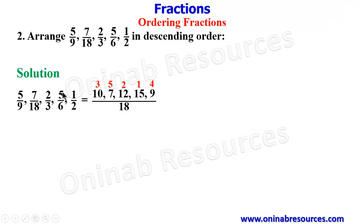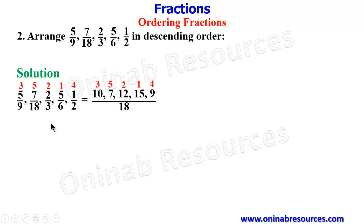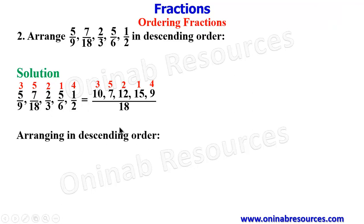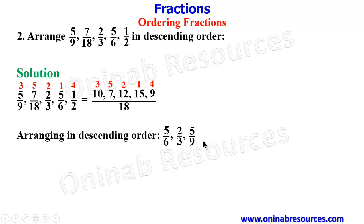This means among these fractions the largest is 5/6, followed by 2/3, then 5/9, then 1/2, and the smallest is 7/18. So arranged in descending order: 5/6, 2/3, 5/9, 1/2, and 7/18. We have succeeded in arranging the fractions in problem 2 in descending order.